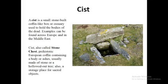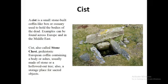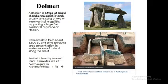A cyst is a small stone-built coffin-like box or ossuary used to hold the body of the dead. Examples can be found across Europe and in the Middle East. A cyst, also called a stone chest, is a prehistoric European coffin containing a body or ashes, usually made of stone or hollowed-out tree, and also a storage place for sacred objects.